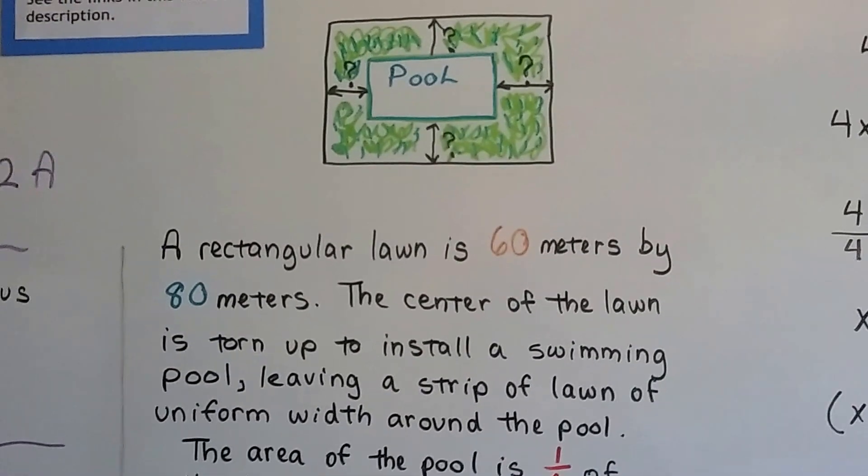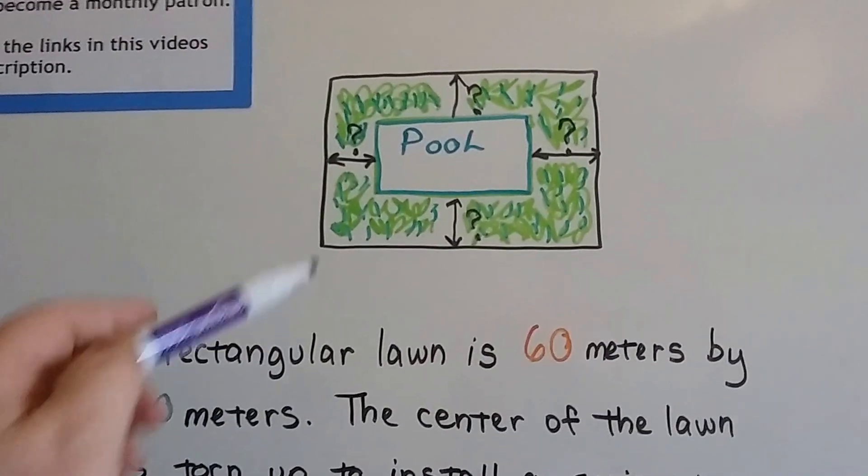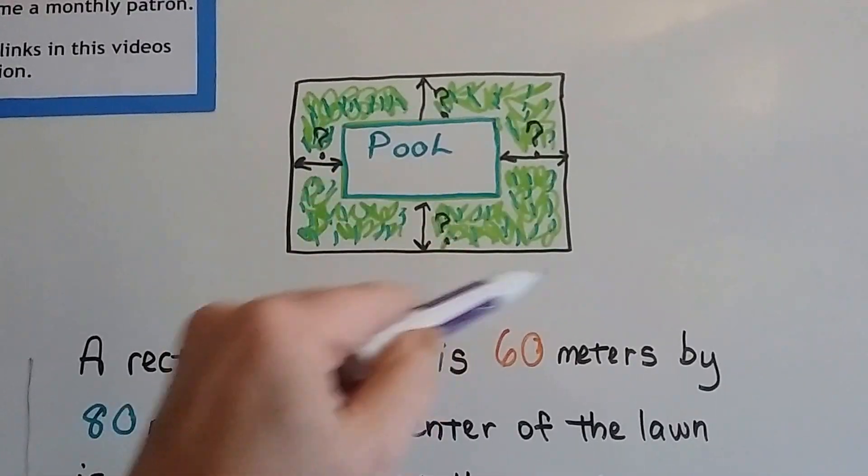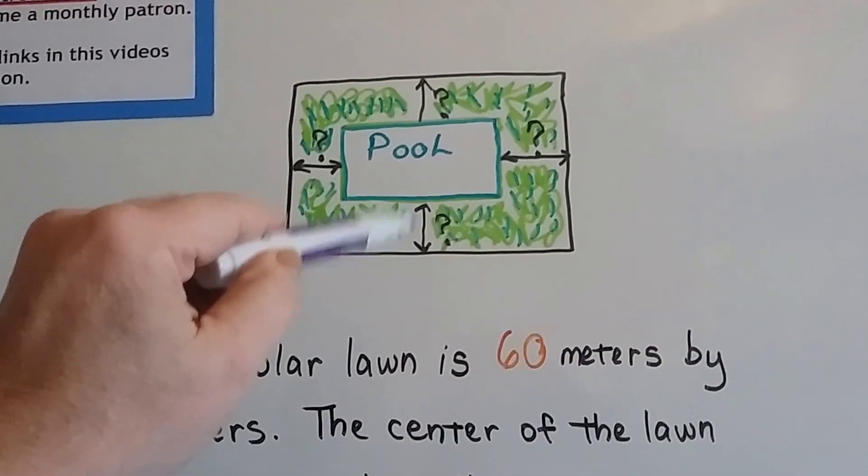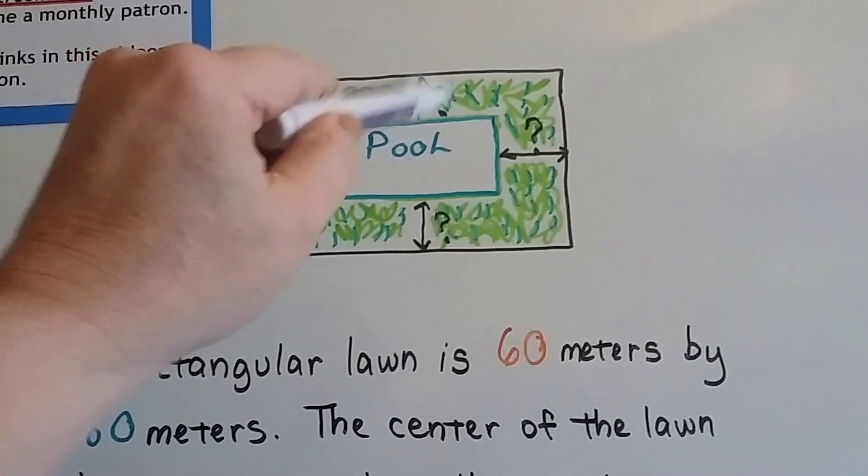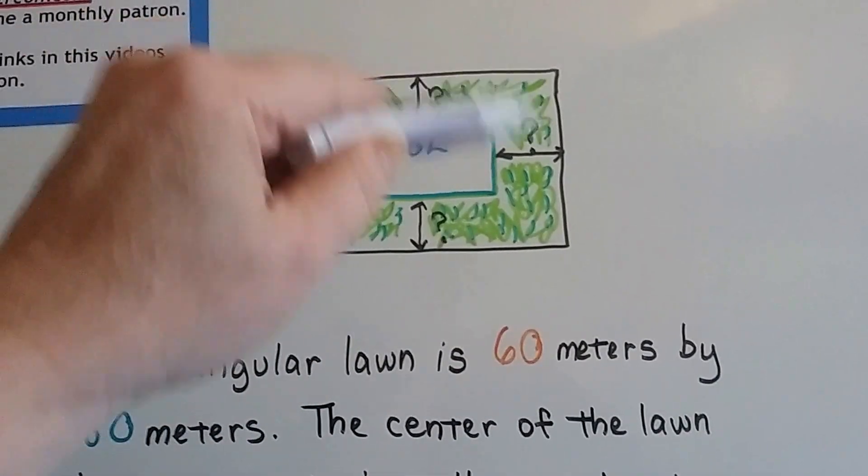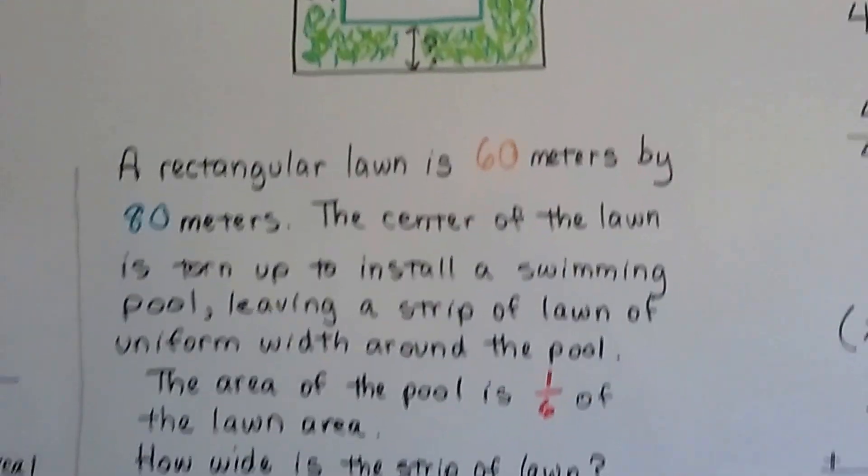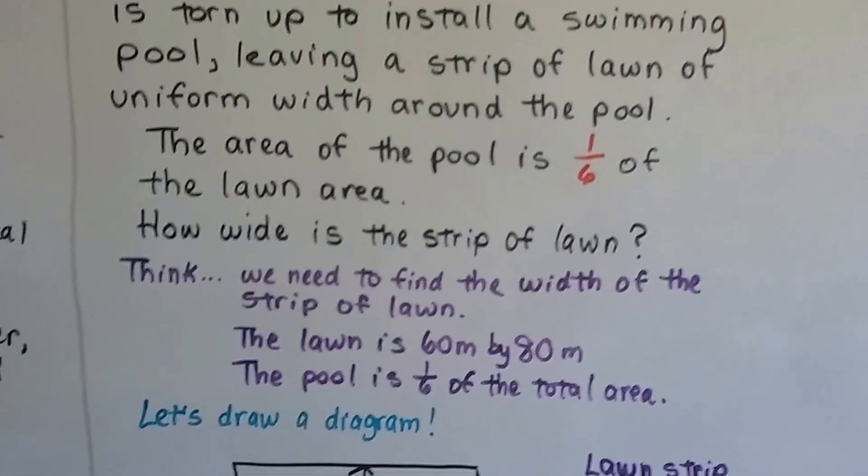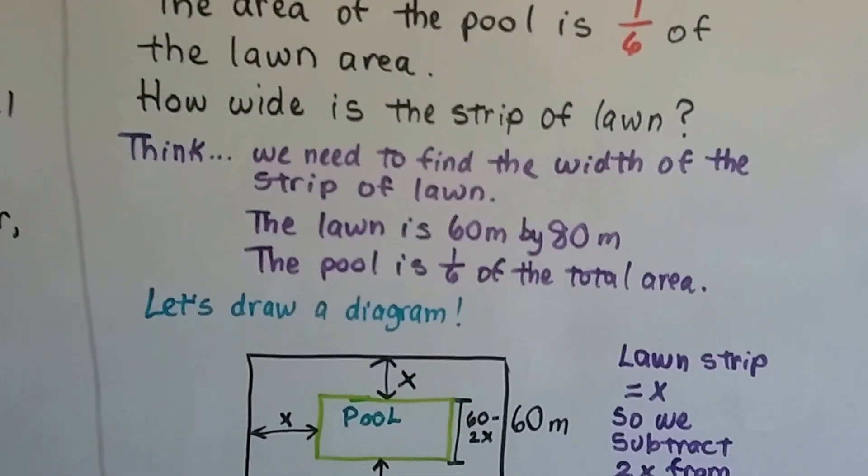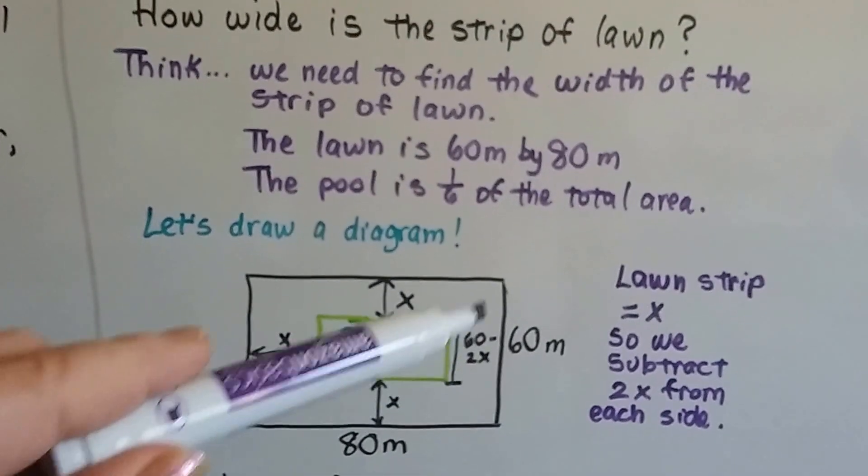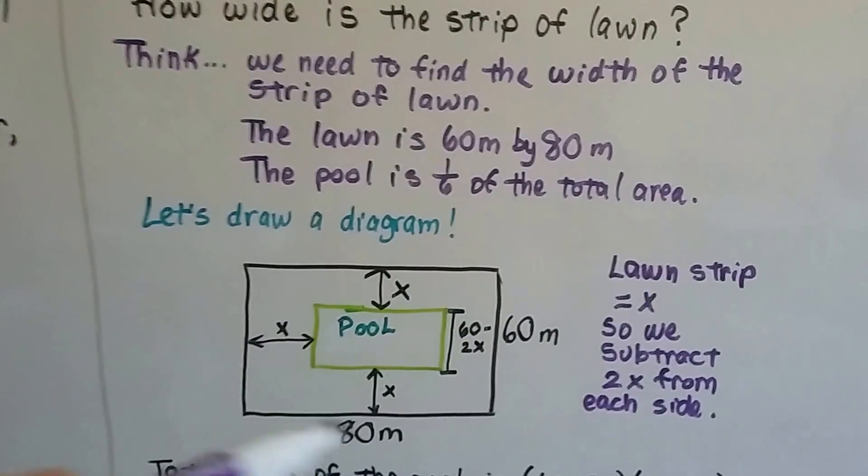Drawing a diagram is going to help us visualize what we're trying to do here. It's 60 by 80, and we need to figure out how wide this lawn strip is around this pool. We need to find the width of the strip of lawn.